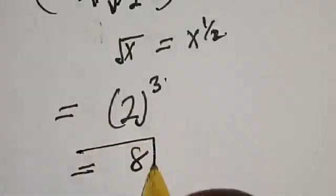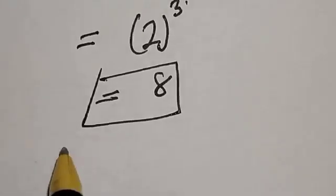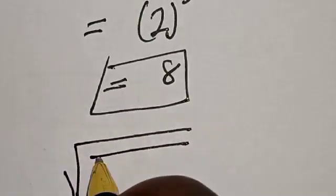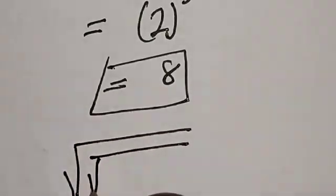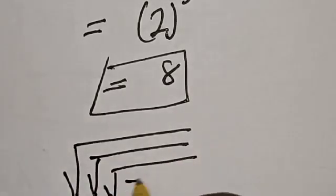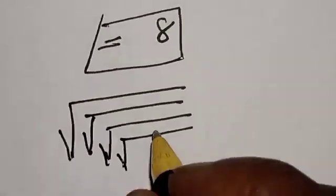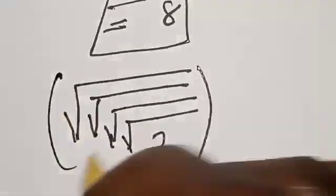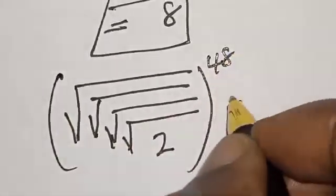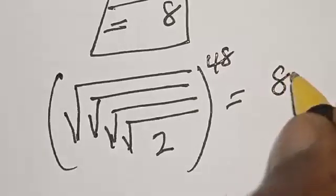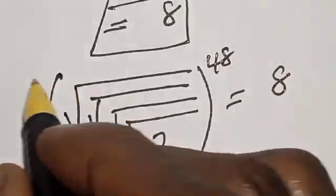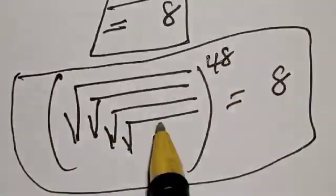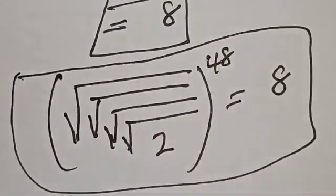Therefore, root of root of root of root of 2, raised to the power of 48, is equal to 8. If you enjoyed the class, please don't forget to like, share, comment, and subscribe. Thank you.